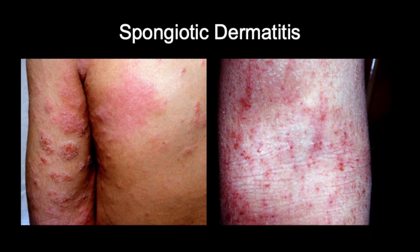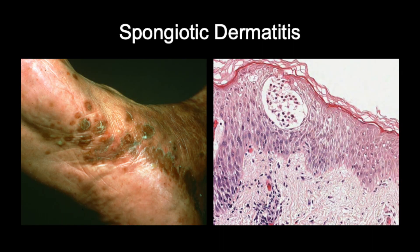Here are some clinical images of spongiotic dermatitis. Less specific-looking than psoriasis, generally less well-demarcated. Usually erythematous with some scale, often some excoriations indicating itchiness — correlating with those eosinophils — and sometimes overlying serum crust. There can be some clues to chronicity, like lichenification, meaning exaggerated skin lines, which correlates with more acanthosis histologically. When you see spongiotic vesicles histologically, that often correlates with tiny little vesicles clinically. There's a variant called dyshidrotic eczema, where you can see tiny little blisters — like tapioca pearl blisters — on the hands and feet.